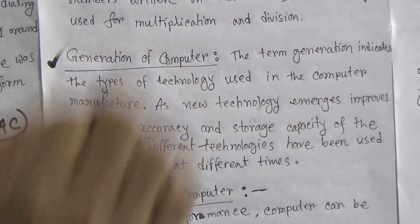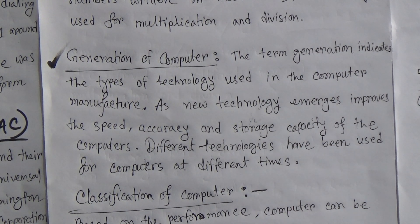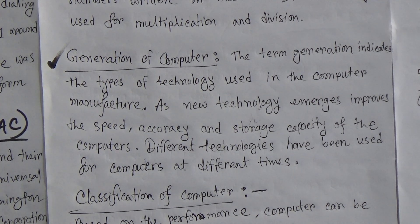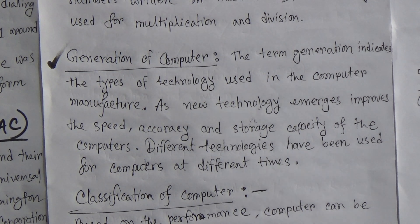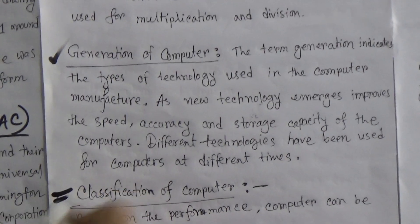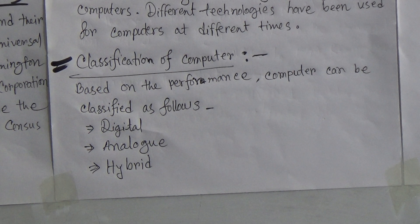Now, generation of computer. The generation indicates the types of technology — that means generation of computer denotes the types of technology used in computer manufacturing. You may find possibly five or six generations of computer. As new technology emerges, it improves the speed, accuracy, and storage capacity of computers. Different technologies have been used for computers at different times.